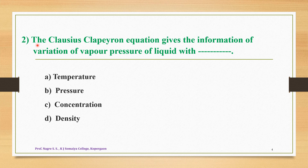Question number two: the Clausius-Clapeyron equation gives the information of variation of vapor pressure of a liquid with — option A is temperature, option B is pressure, option C is concentration, and option D is density. The correct answer is option A — the Clausius-Clapeyron equation gives the information of variation of vapor pressure of a liquid with temperature.